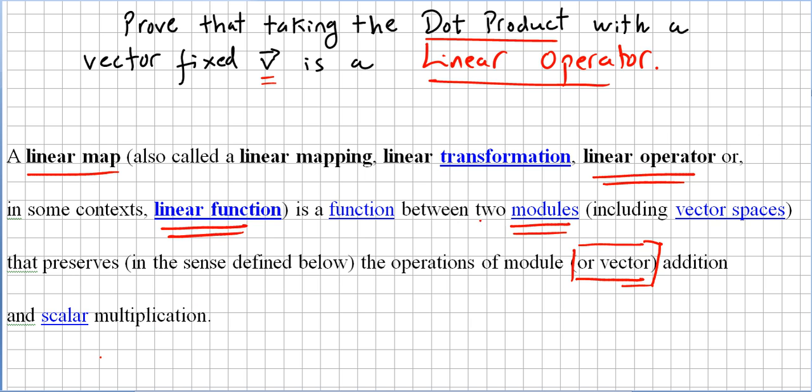This is important. So a linear operator is a function that preserves, these are the important words, a linear operator is a function that preserves vector addition and scalar multiplication.